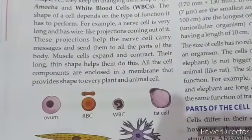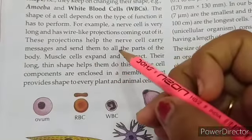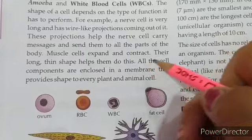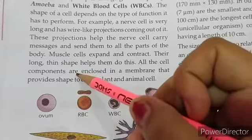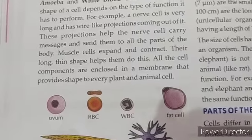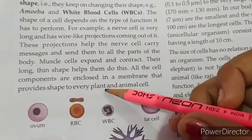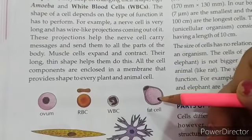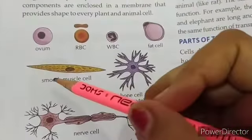These projections help the nerve cell carry messages and send them to different parts of the body. Muscle cells expand and contract; their long thin shape helps them to do this. All the cell components are enclosed in a membrane that provides shape to every plant and animal cell.